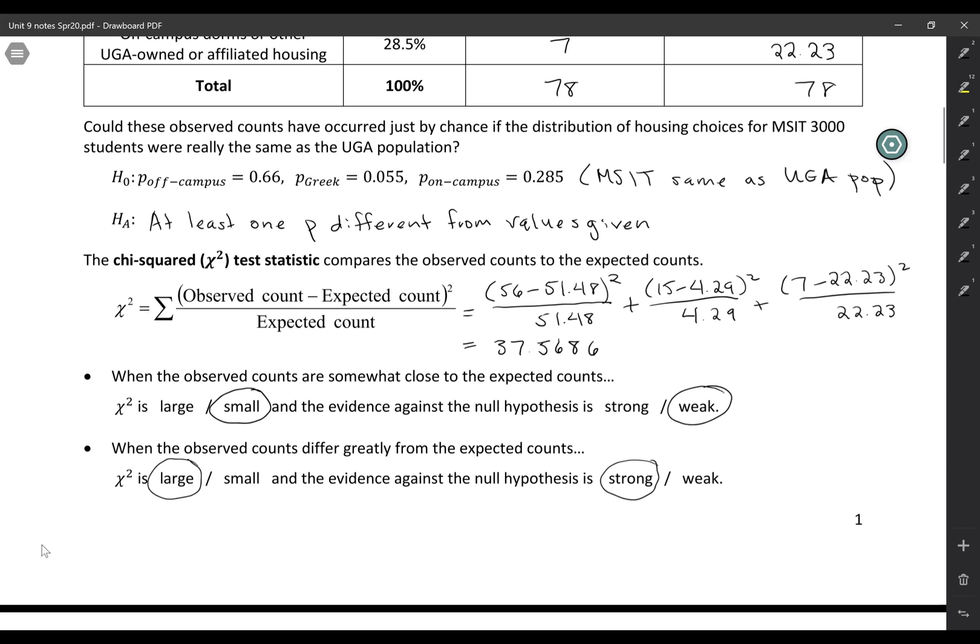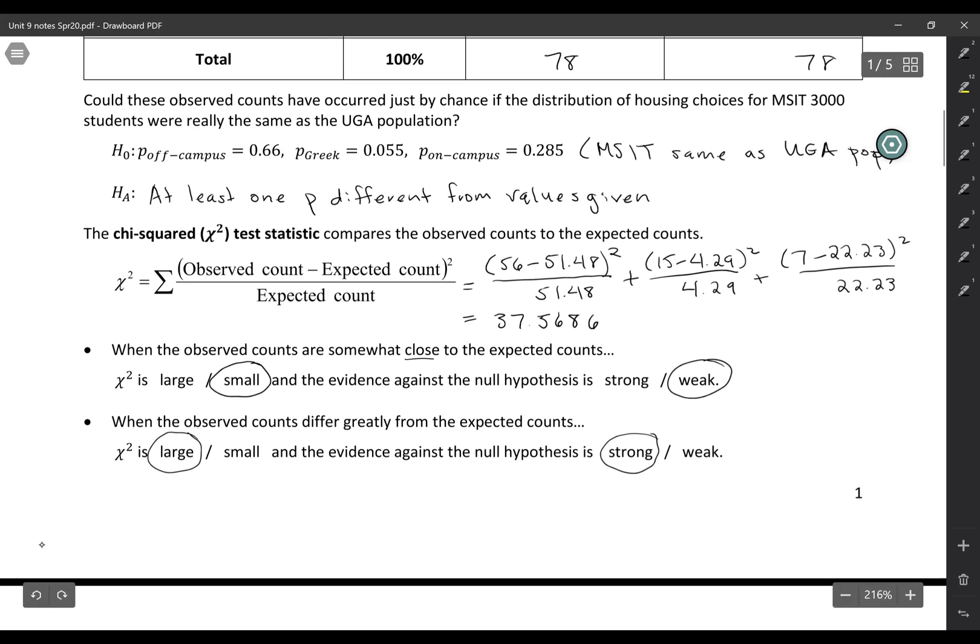So, of course, there's this problem. We're saying close and differ greatly. Those are pretty subjective terms. So in the next video, I'll show you how to use JUMP to actually calculate p-values and quantify how large does your chi-squared statistic need to be before you're convinced that there's a difference in the distribution.